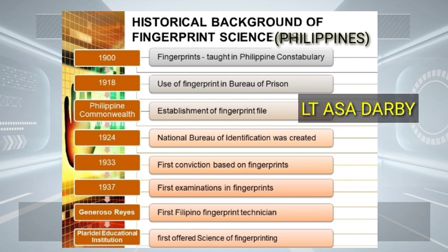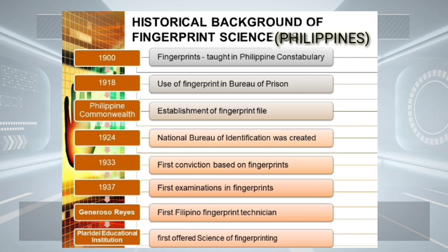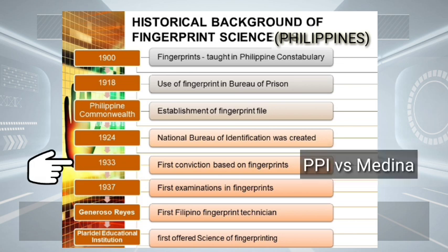During the American occupation in the Philippines, in 1924, the first National Bureau of Identification was created by act of Congress and established with the US Department of Justice in Washington DC. On December 23, 1933, the first conviction based on fingerprints was handed down by the Supreme Court of the Philippines.